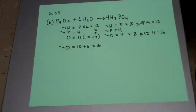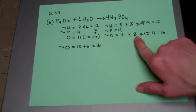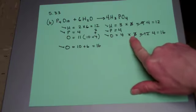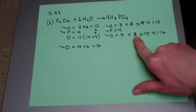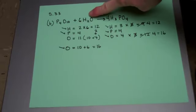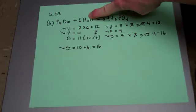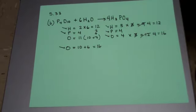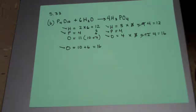Sometimes it takes a little work. We initially tried three because we were looking at oxygens, but that gave an odd number of hydrogens we could never balance. Trying the next number up — four — gave us a workable solution and a balanced equation. So don't give up if the first thing you try doesn't work.